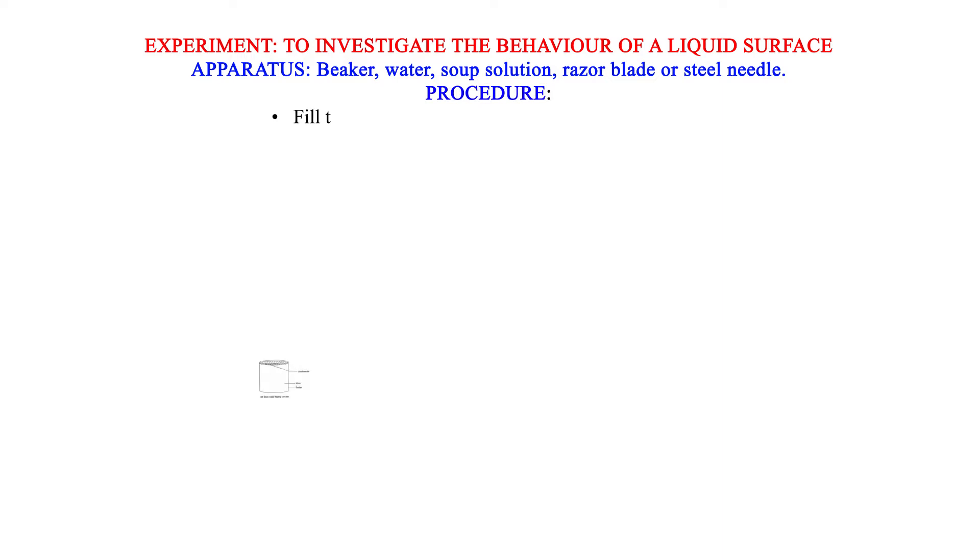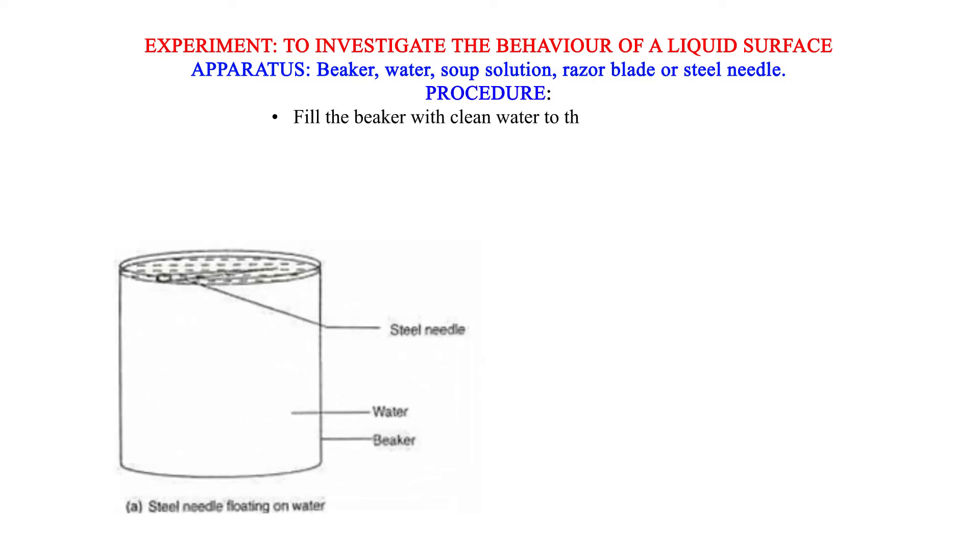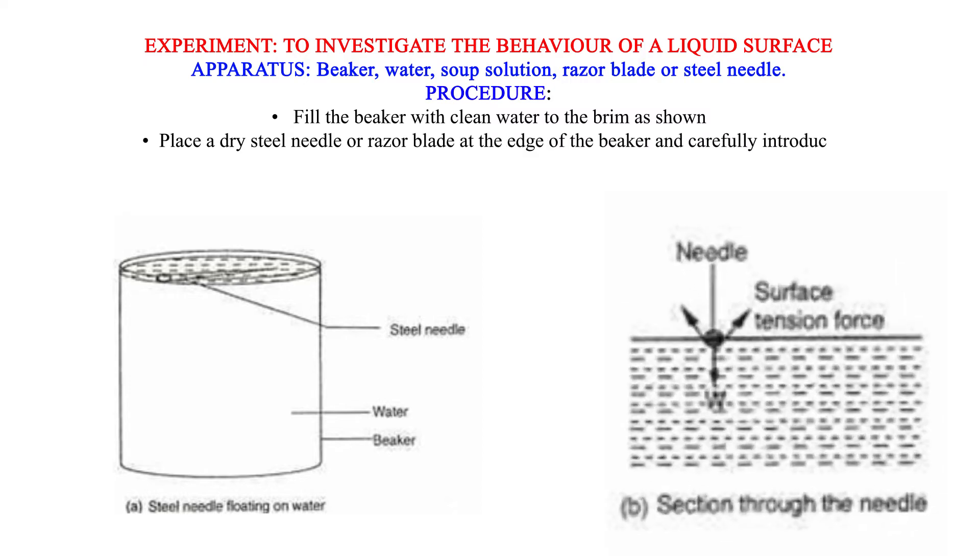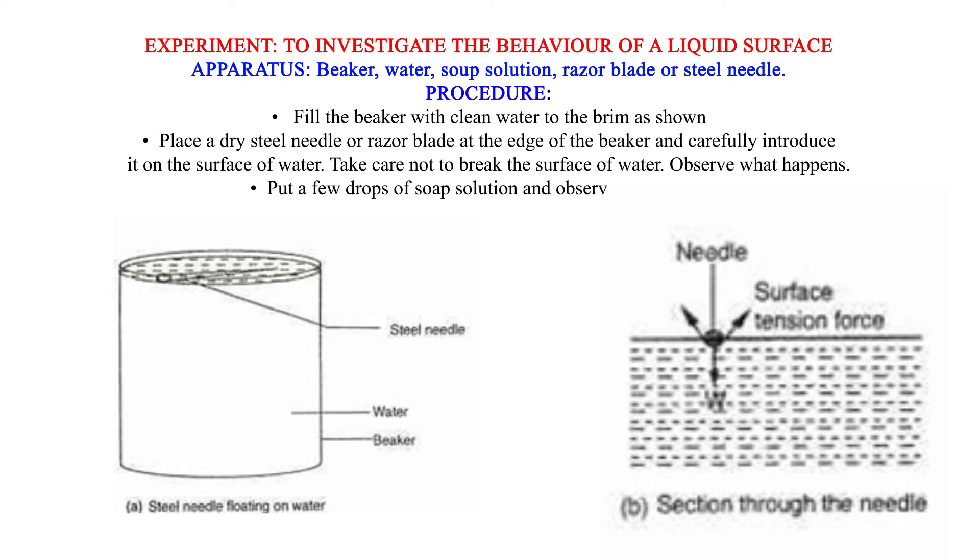Procedure: Fill the beaker with clean water to the brim as shown. Place a dry steel needle or razor blade at the edge of the beaker and carefully introduce it on the surface of water. Take care not to break the surface of water. Observe what happens. Put a few drops of soap solution and observe what happens. Depress the tip of the needle into the water and observe what happens.